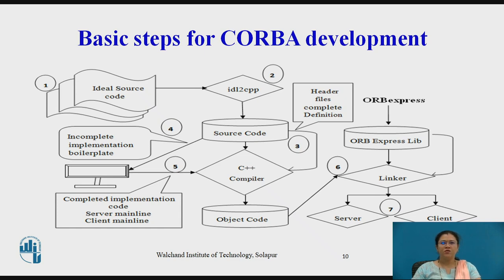Once all the object code from steps 3 and 5 has been compiled, in the sixth step the object implementation classes need to be linked to the C++ linker. Once linked to the ORB library — in this example, ORB Express — two executable operations are created: one for the client and one for the server. In the last step, the development process is now complete and the client will communicate with the server. The server uses the object implementation classes, allowing it to communicate with the objects created by the client request.